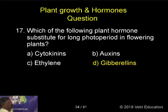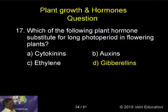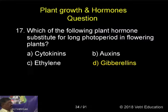Which of the following plant hormones substitute for long photoperiod in flowering plants? Cytokinins, auxins, ethylene, gibberellins.